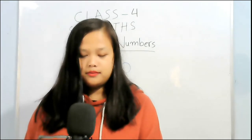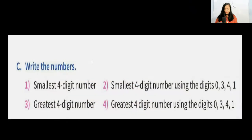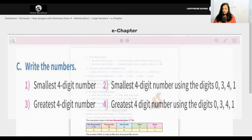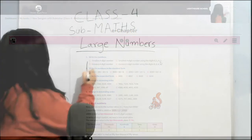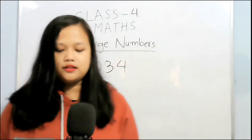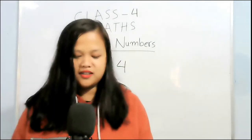And question number 2, smallest 4-digit number using the digits 0, 3, 4, 1. Here 0 is the smallest but we cannot start the number with 0. So 1, 0, 3, 4. It should not start from 0.